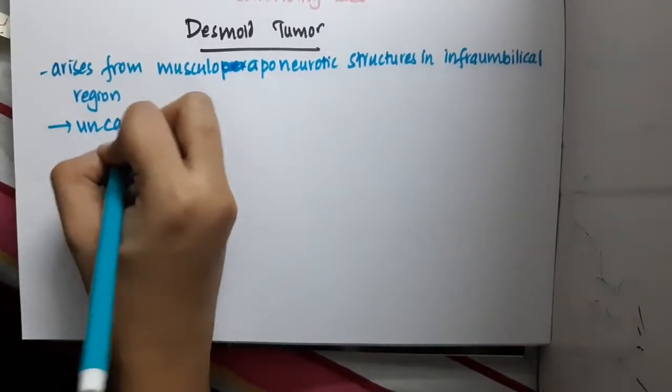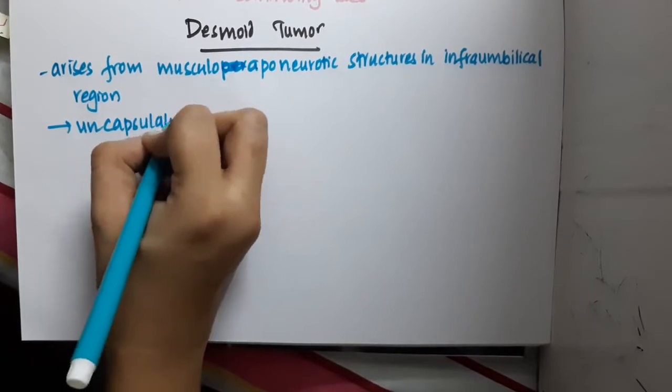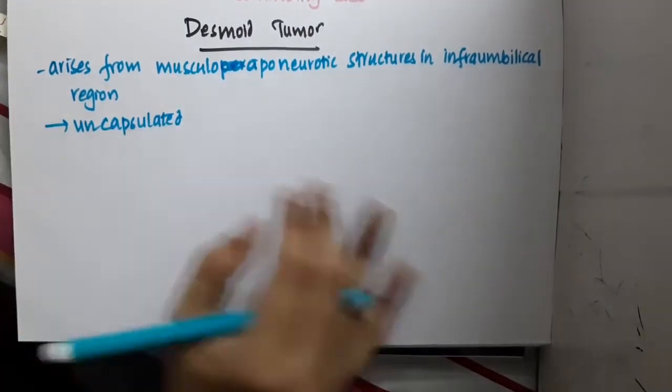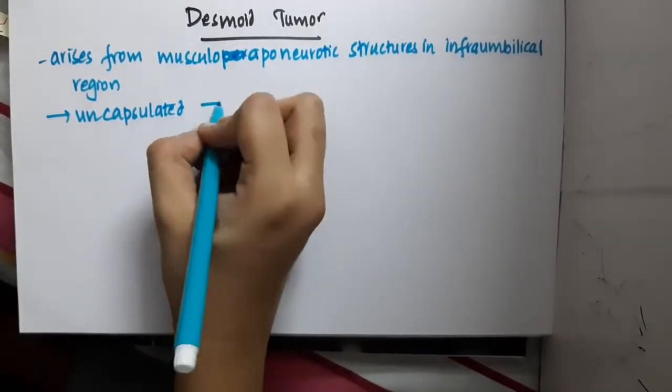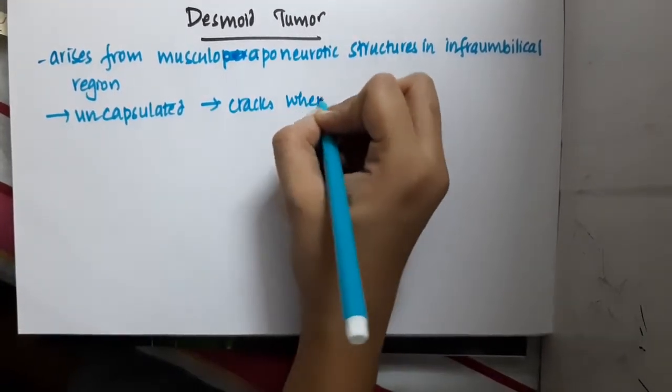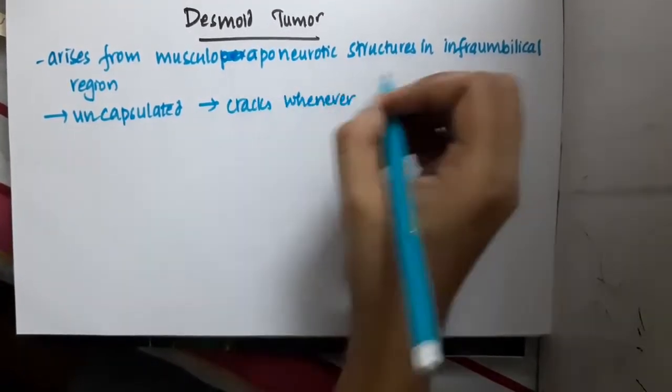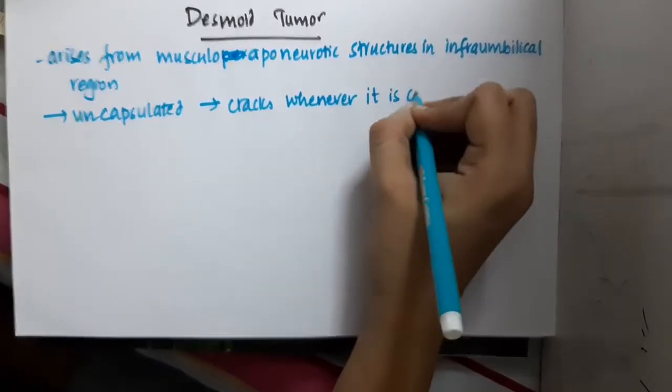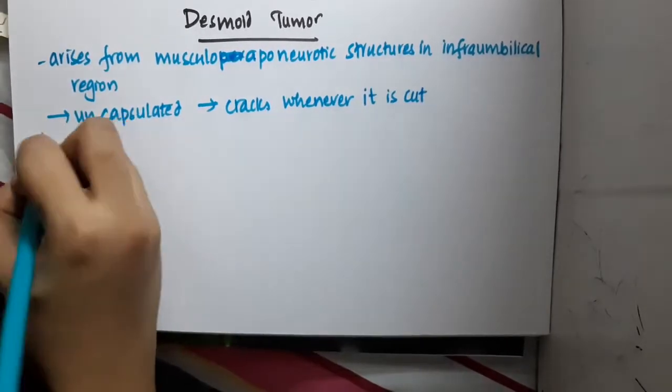This Desmoid tumor is an uncapsulated tumor. And because it is uncapsulated, it cracks whenever it is being cut. On cutting, you will hear the cracks.